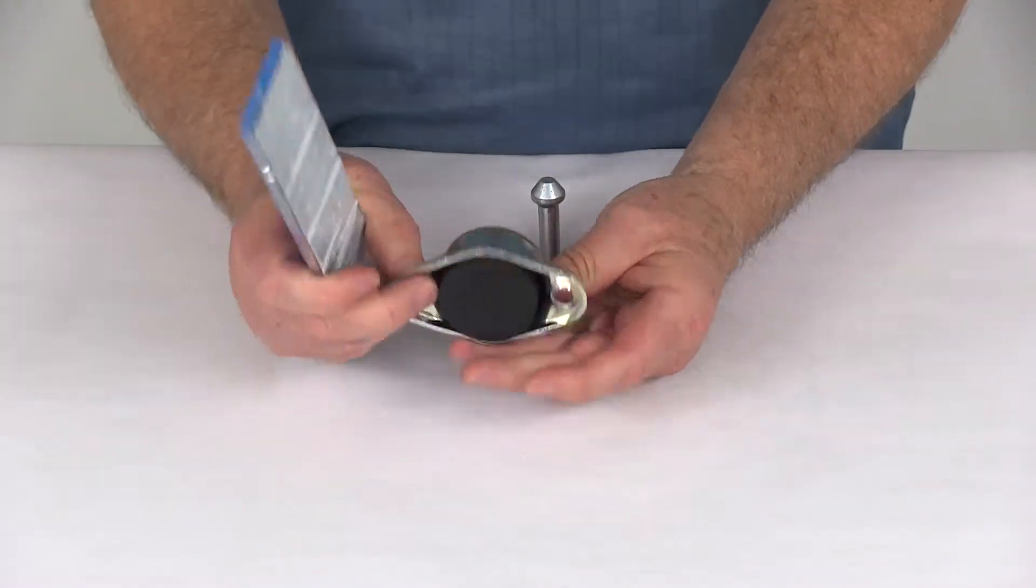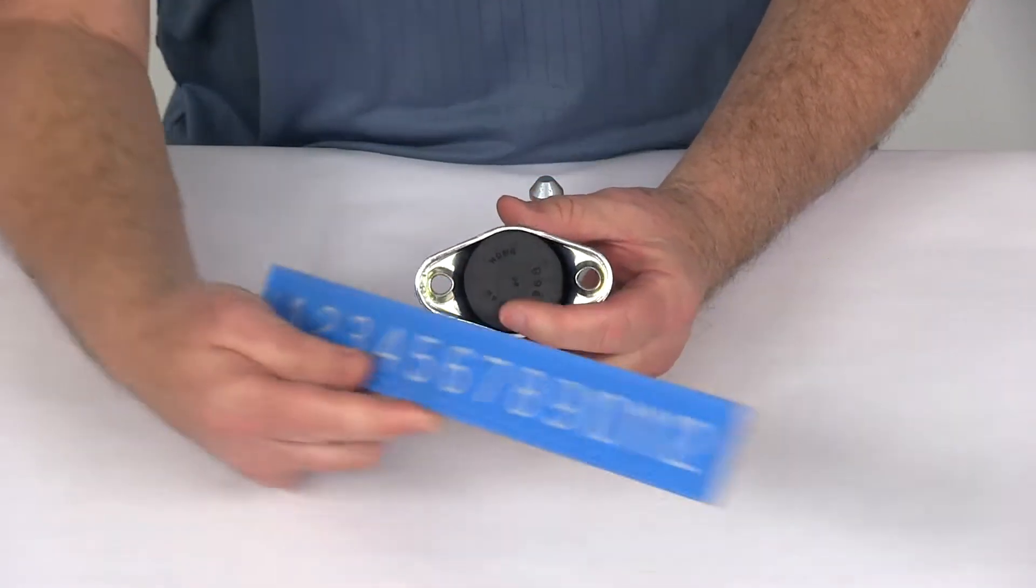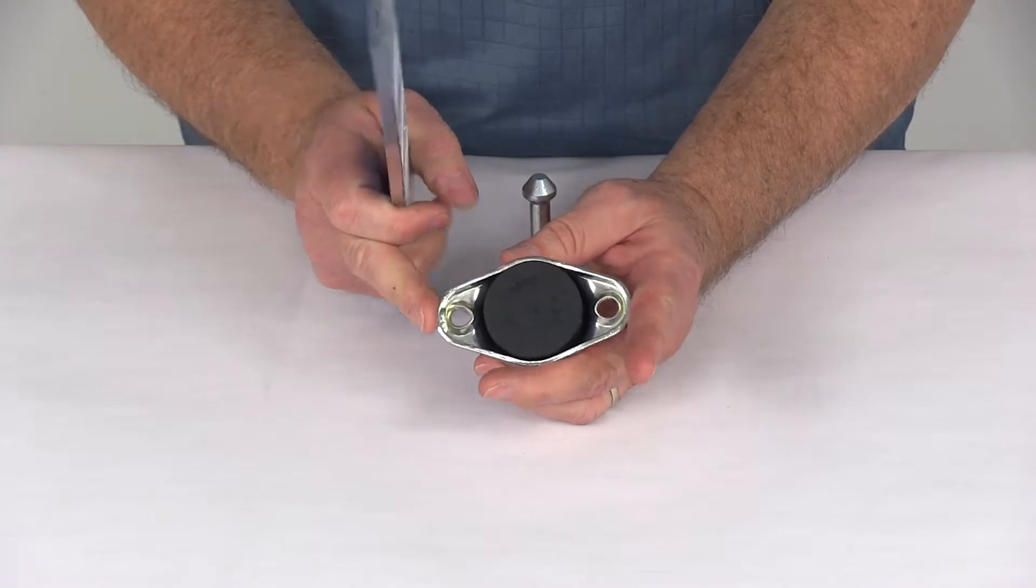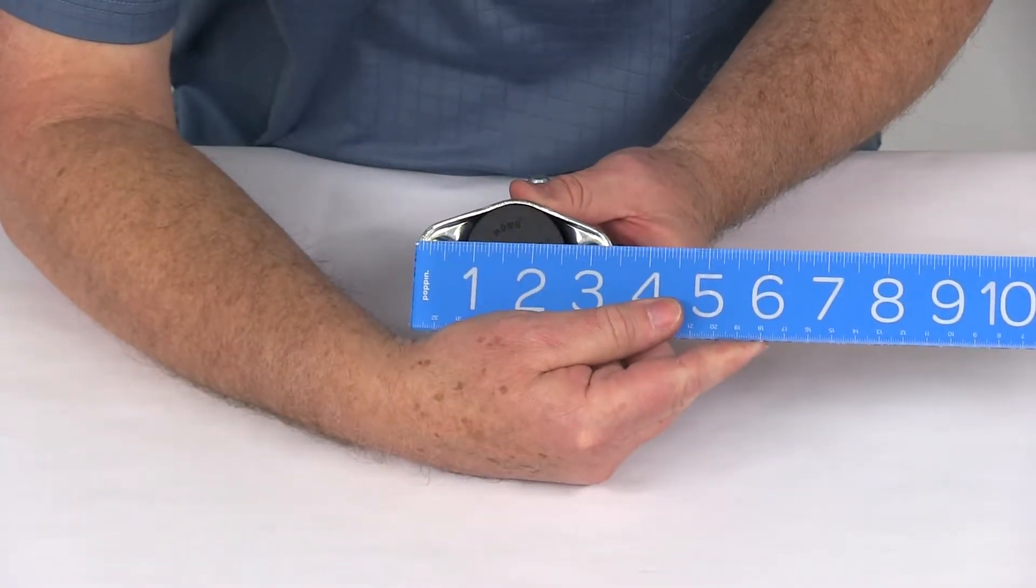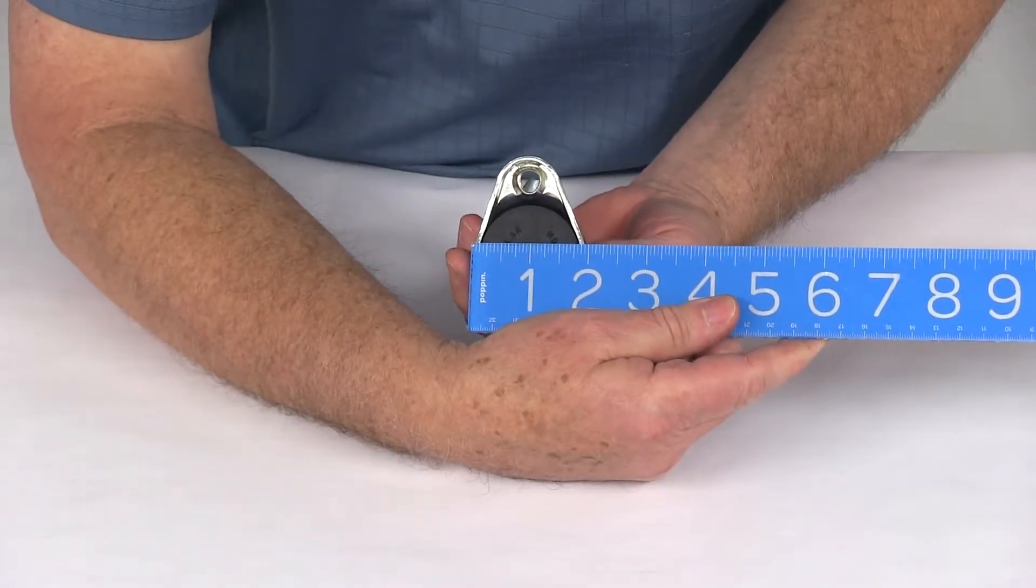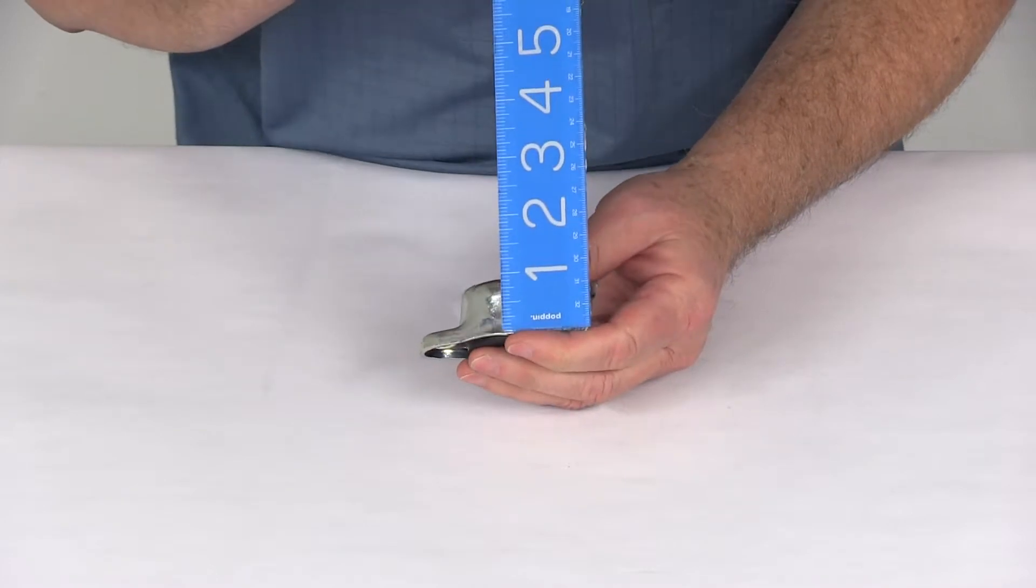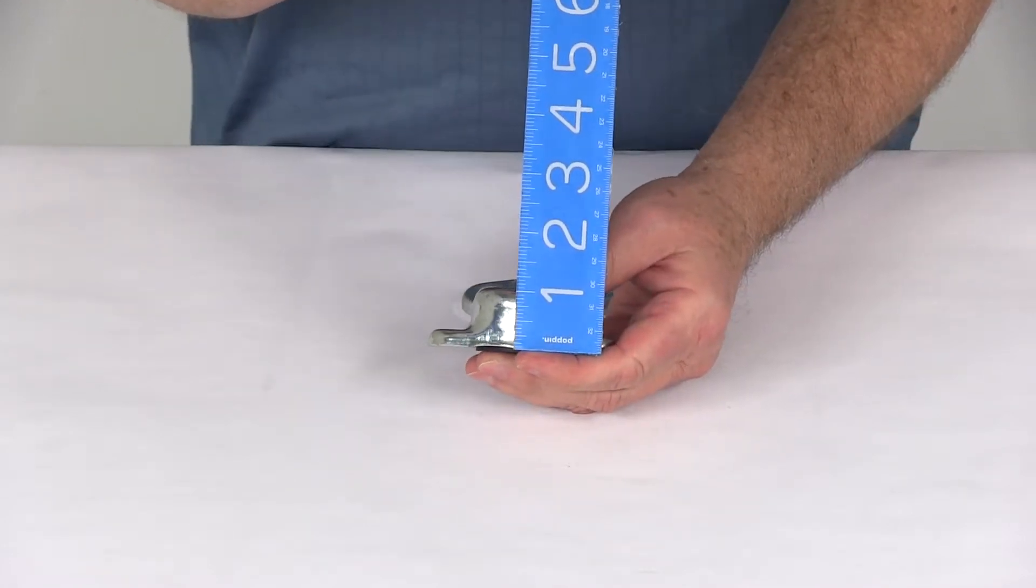Now on the socket, the mounting hole center to center is right at two and a half inches. The overall edge to edge on the socket is right at three and three-eighths inches. The width at the widest point is right at one and fifteen-sixteenths inches, and the height from bottom to top is right at one inch.